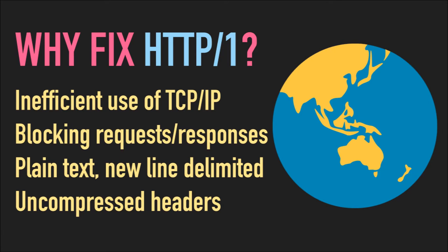First of all, why would we need to fix HTTP1? What's wrong with it? Basically with HTTP1, you're not really using TCP/IP effectively. You're ramping up multiple sockets — like six or eight — to request a whole bunch of assets. Each of those needs to ramp up to its speed. That's built into TCP fundamentals, the algorithms that determine how fast you can request and receive data. One socket would be ideal.